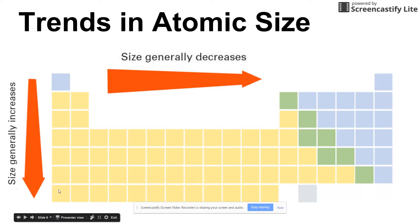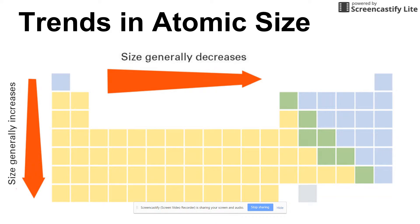As you move from top to bottom, atomic size is increasing. The reason is that you are adding energy levels as you move down through successive periods. Each successive period has one more energy level, and each energy level is further and further away from the nucleus, which generally increases the atomic size.